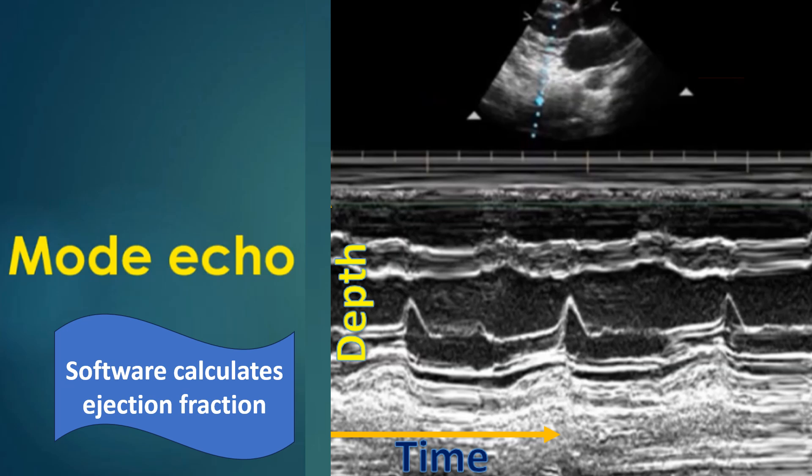The fact that the interface between two different media produces the best echoes is demonstrated in the pattern of the interventricular septum. Both upper and lower margins are echo dense while the intervening tissue is less echo dense. The vertical axis in this image is depth and the horizontal axis is time.